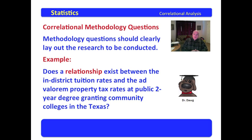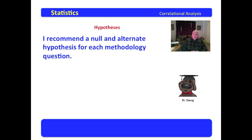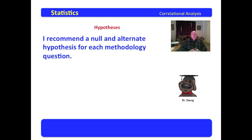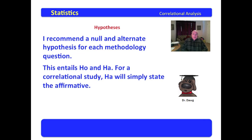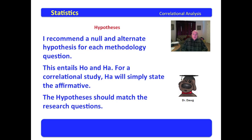Now we have a methodology question, so it's time to write hypotheses. I recommend a null and an alternate hypothesis for each methodology question. Descriptive questions don't require hypotheses, but the methodology question does. I like H-O for the null and H-A for the alternate. For a correlational study, H-A will simply state the affirmative and H-O will state the negative.